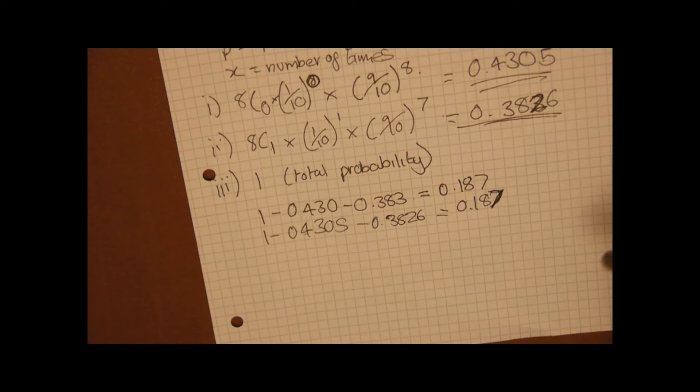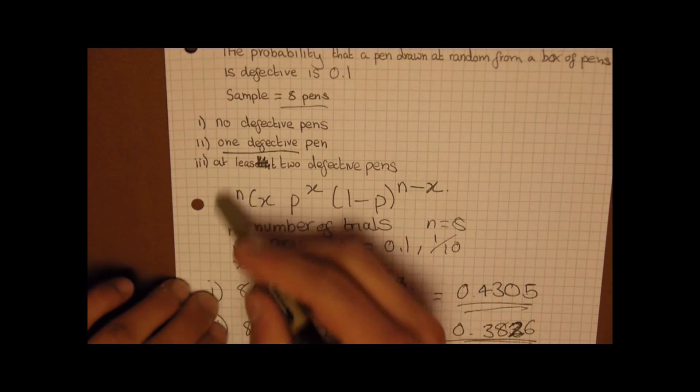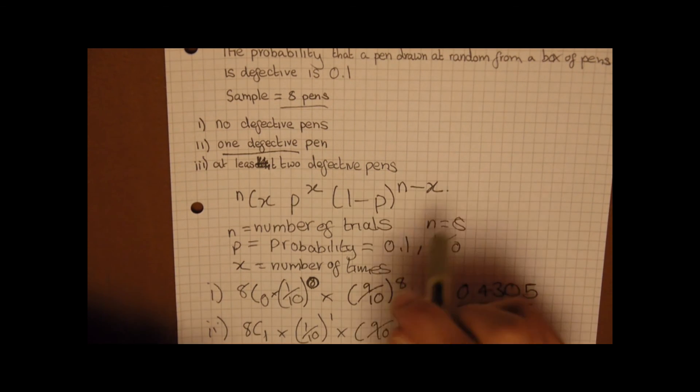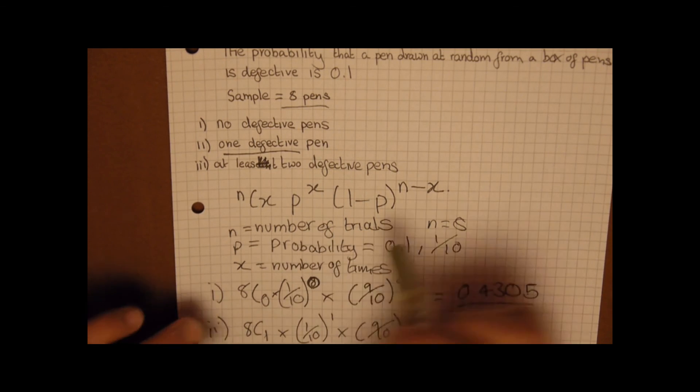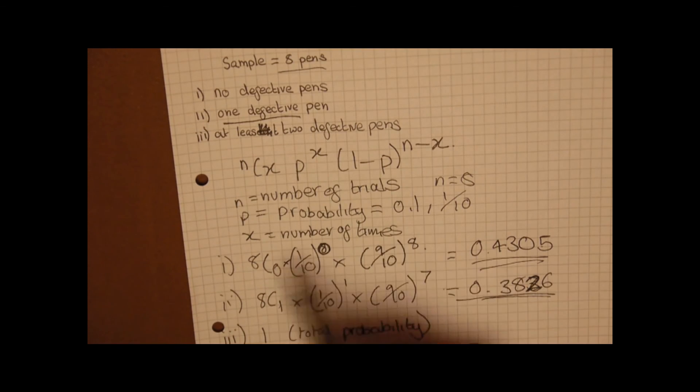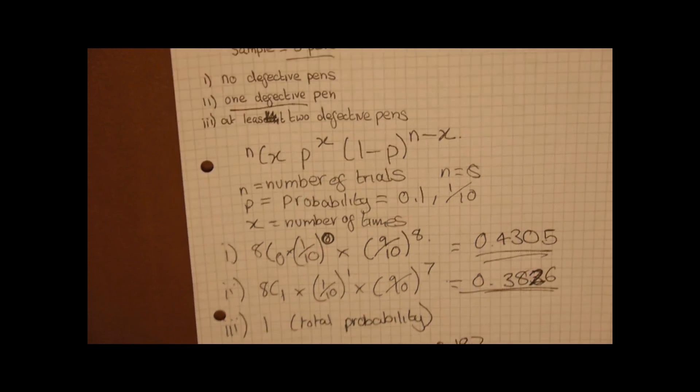So just to recap: we've used the formula nCx times p to the x times 1 minus p to the power of n minus x, and I've explained what each of the variables are. n is the number of trials, p is your probability, x is your number of times.